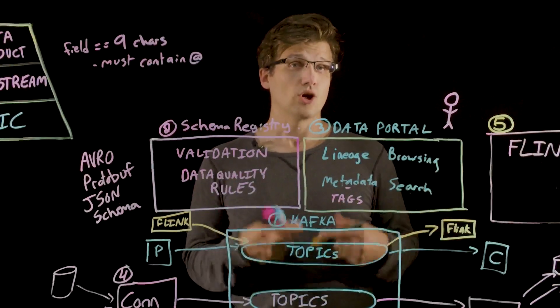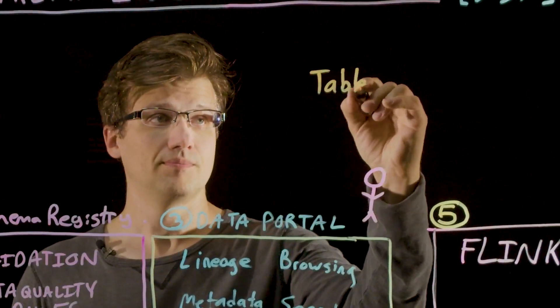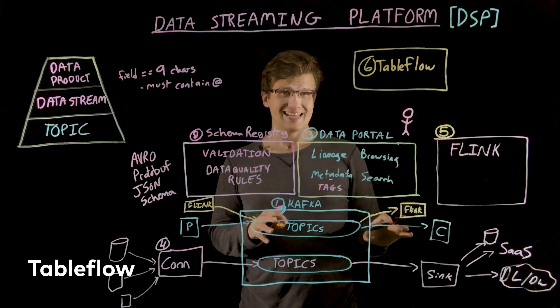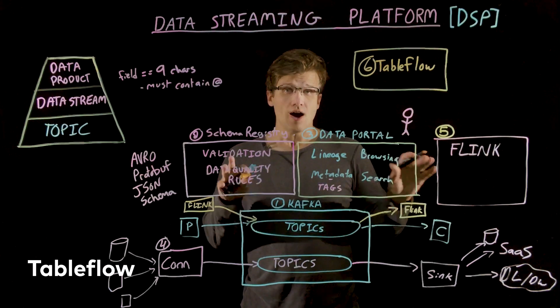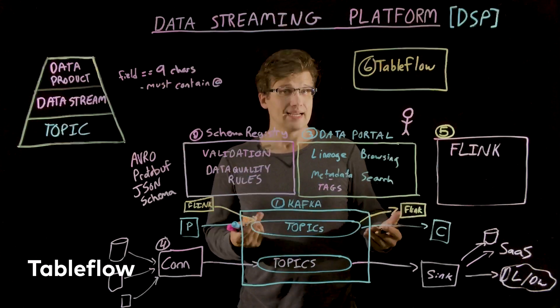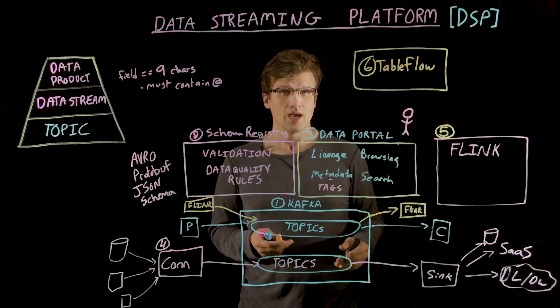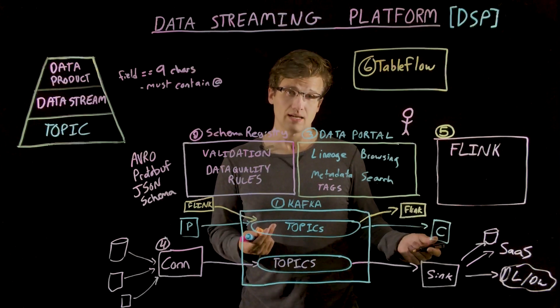And now for our sixth and final major component, table flow. One major historical streaming use case is to pump data into a data lake or data warehouse, as I showed earlier. It's often written as a big parquet-backed columnar table.